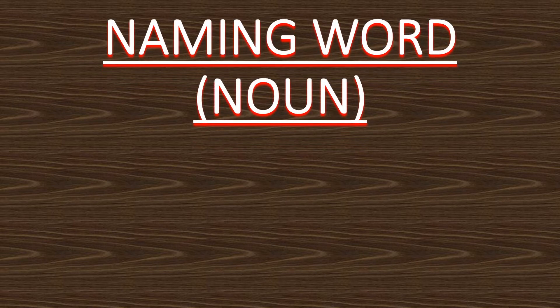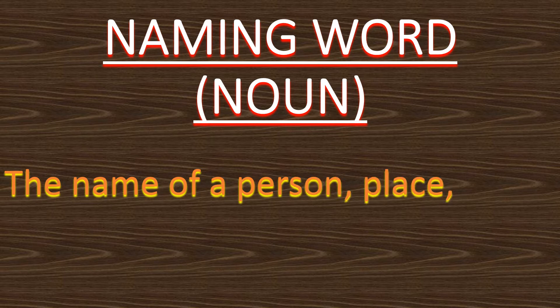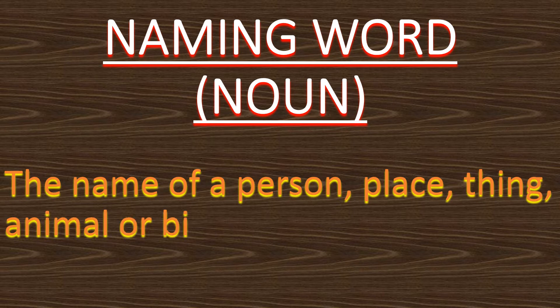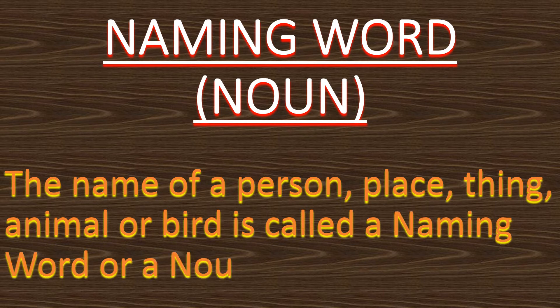At first, let us see what is a naming word or a noun. The name of a person, place, thing, animal, or bird is called a naming word or a noun.